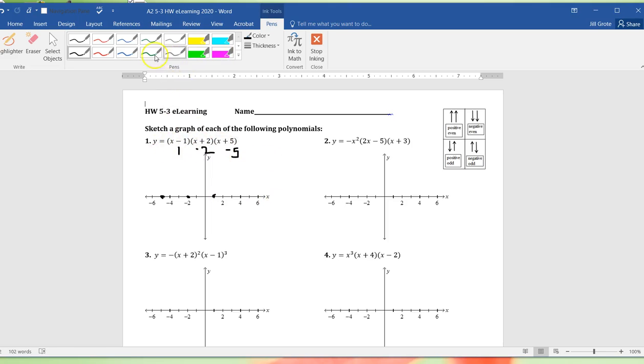This would be X to the third as my leading coefficient. I'm going to switch up the color so you can see my graph. This should go with X to the third as the leading coefficient, down at the beginning, up at the end. This does not have to be perfect in any way.